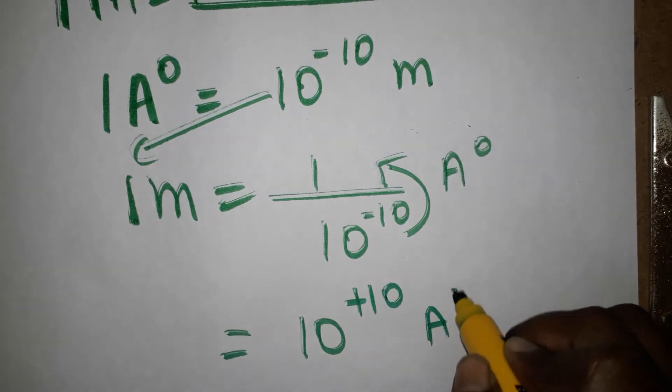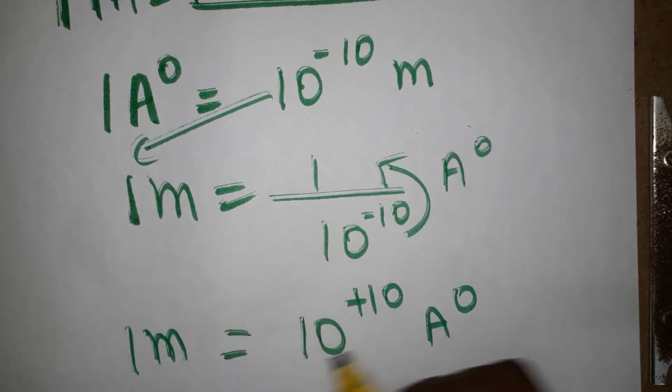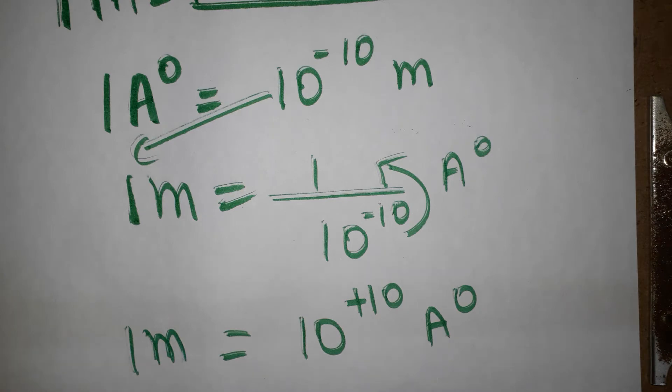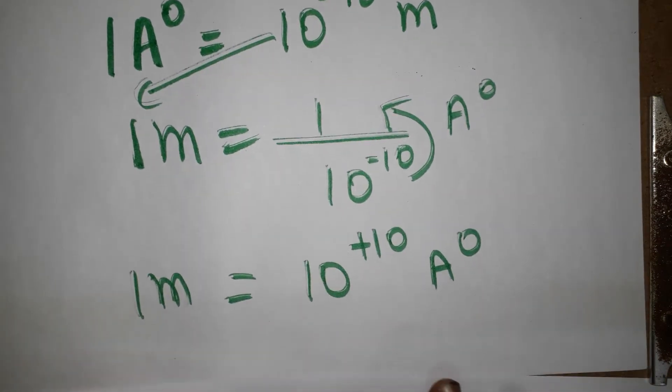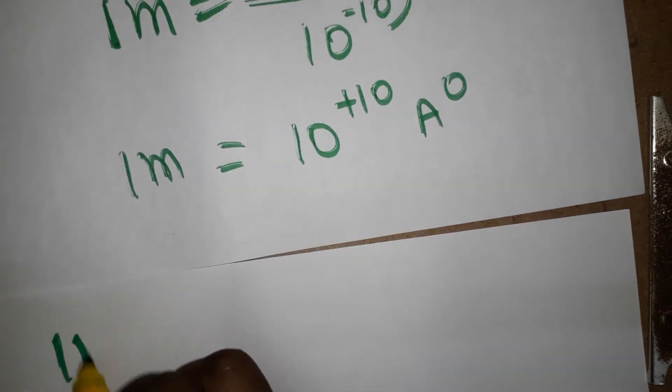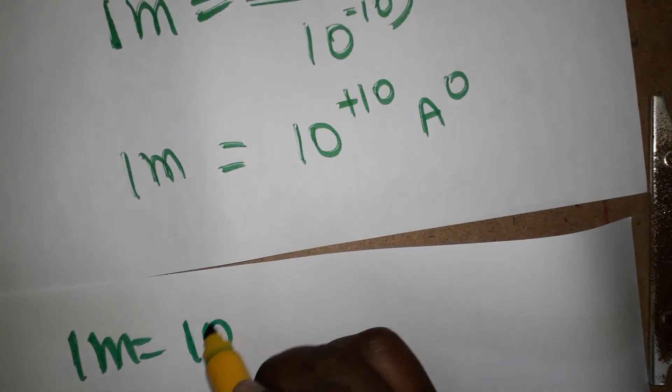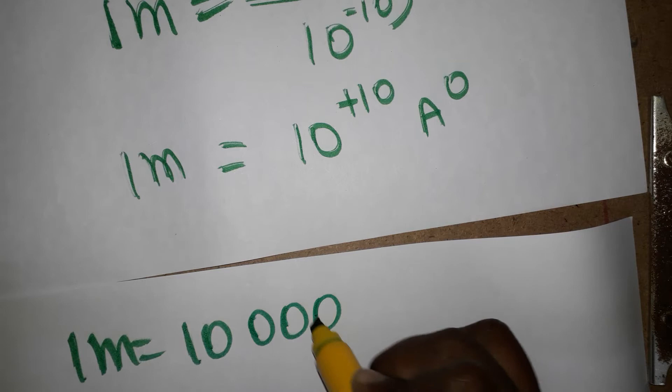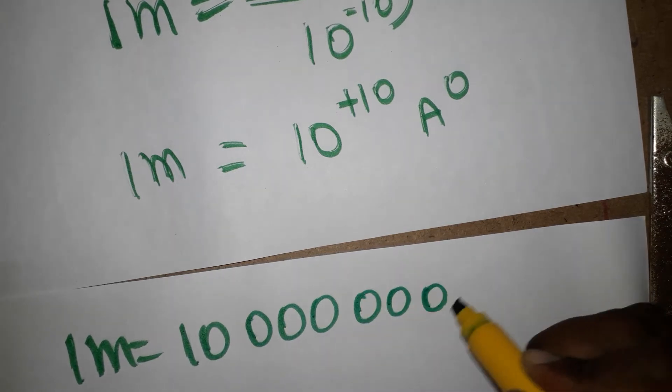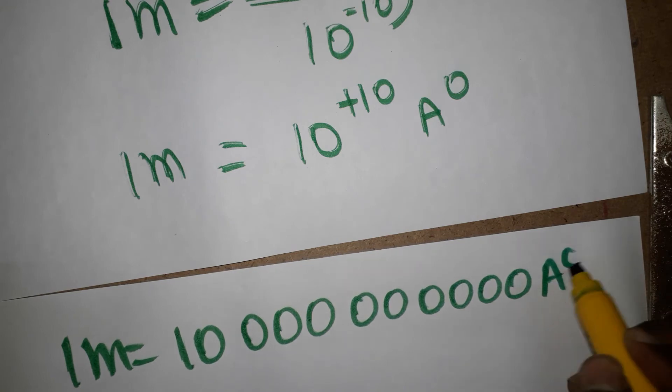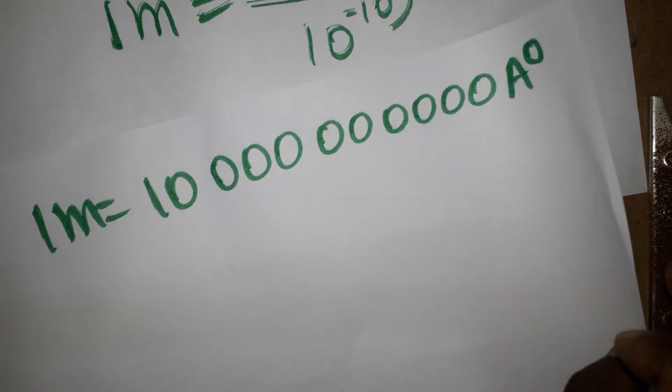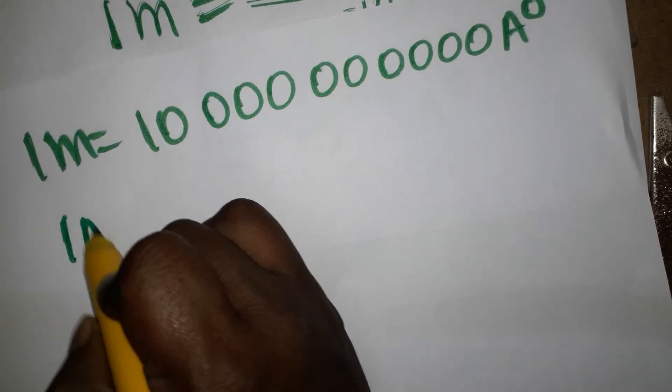So one meter is 10 power plus 10 angstrom units. That means it is a 10 with zeros we have to add. So one meter equals - one, two, three, four, five, six, seven, eight, nine, ten - ten zeros angstrom units. Now, the opposite way, one angstrom unit